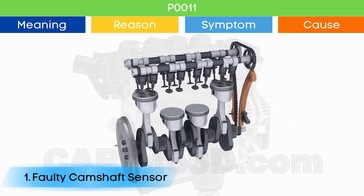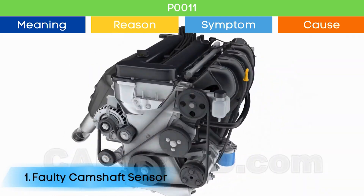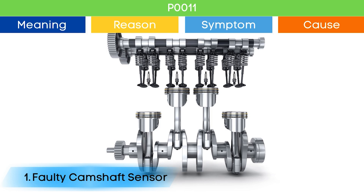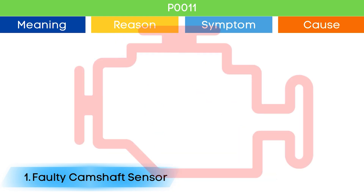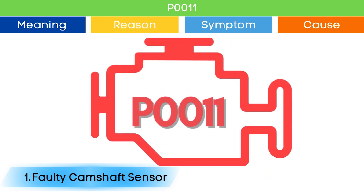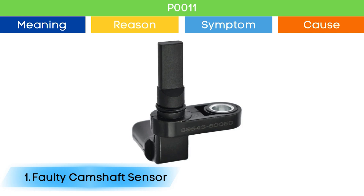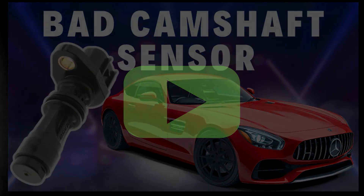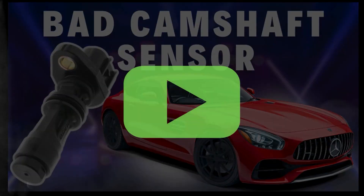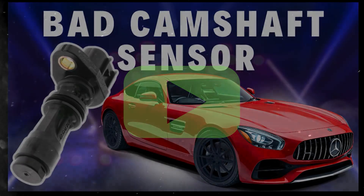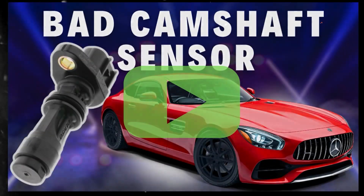Cause number one: Bad camshaft position sensor. Due to the malfunction of the camshaft position sensor, the ECU may detect an engine timing error, which may trigger P0011 and other OBD-II codes related to camshaft position sensors, along with symptoms of a bad camshaft position sensor. Check our detailed video to learn more about the symptoms of a bad camshaft position sensor and related OBD-II codes.